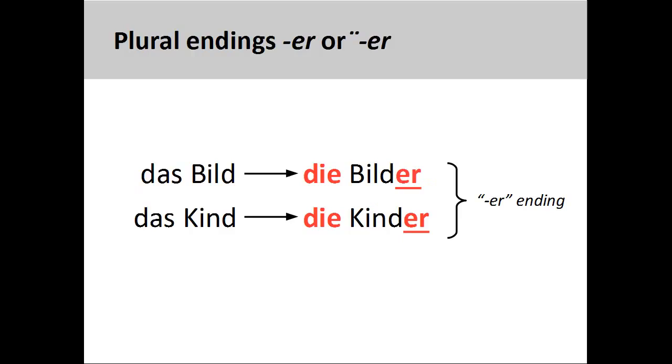The third group consists of nouns that add -er for a plural ending. Most of the nouns in this group are masculine and neuter nouns having one syllable. The noun Kind, child, belongs to this group, Kinder. The noun Bild, picture, also belongs to this group, Bilder.